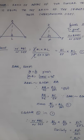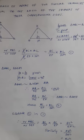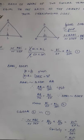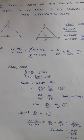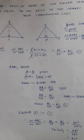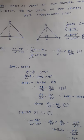This is the second theorem that we have to do with proof. The theorem says that the ratio of areas of two similar triangles is equal to the ratio of the square of their corresponding sides.